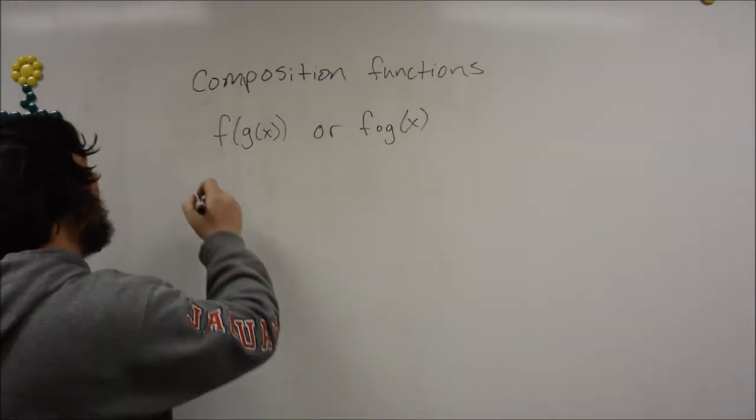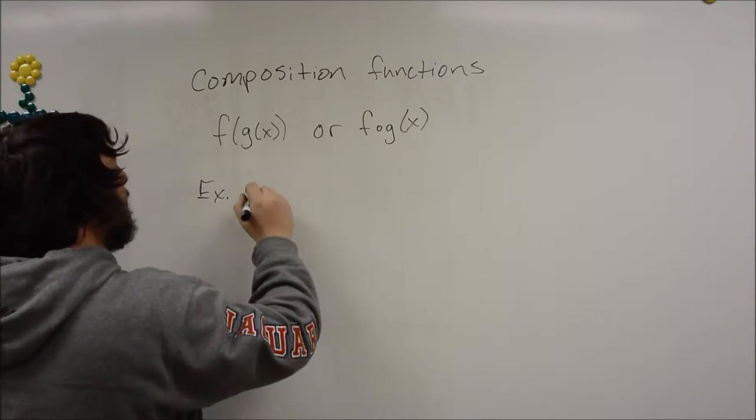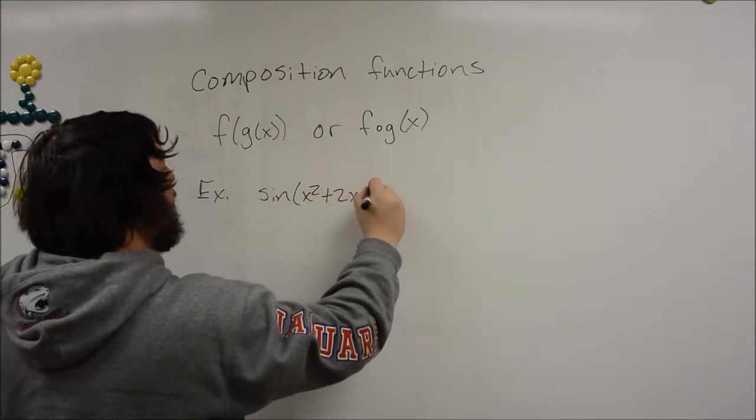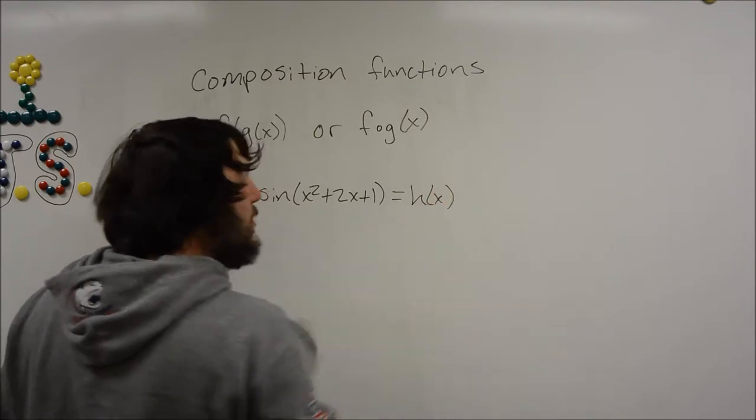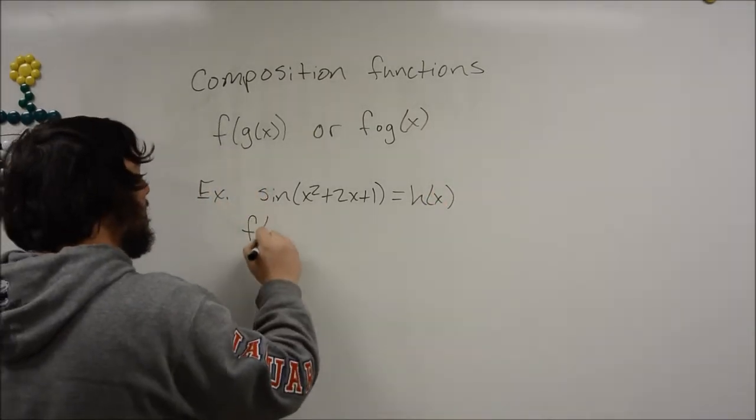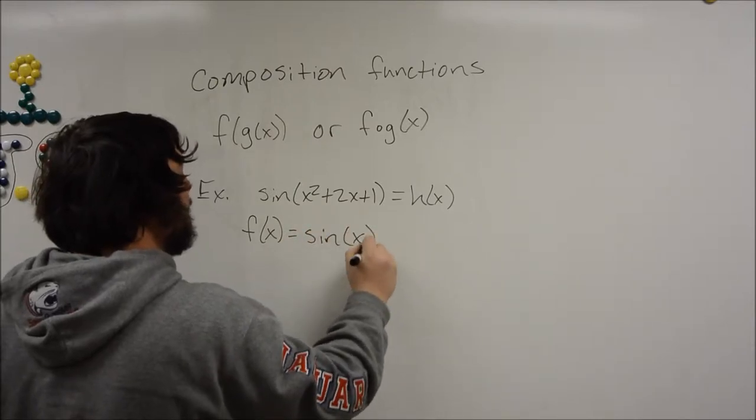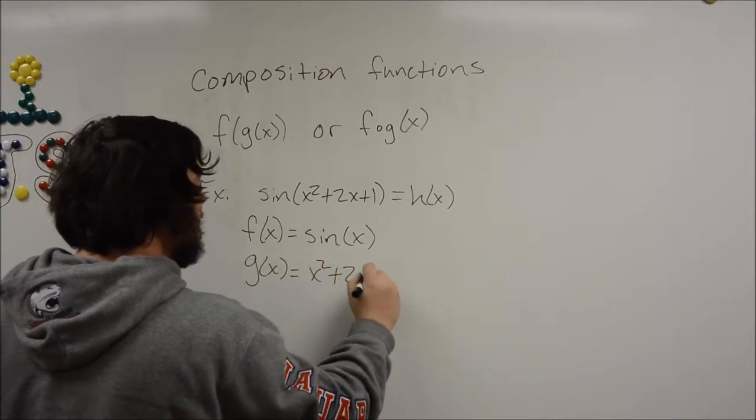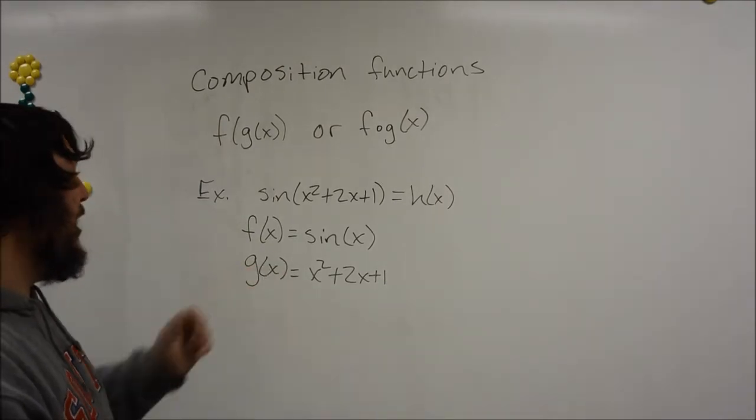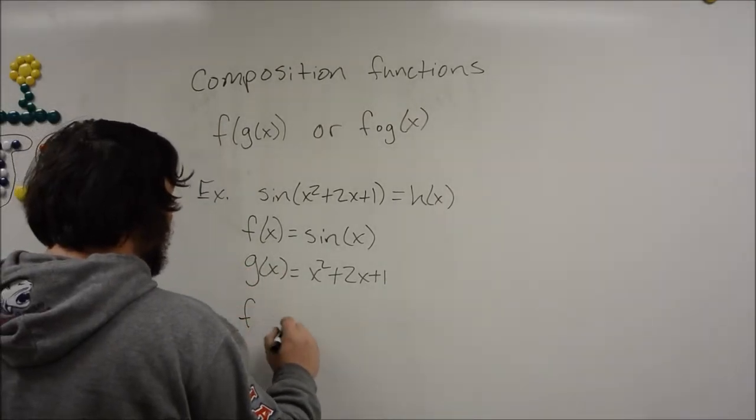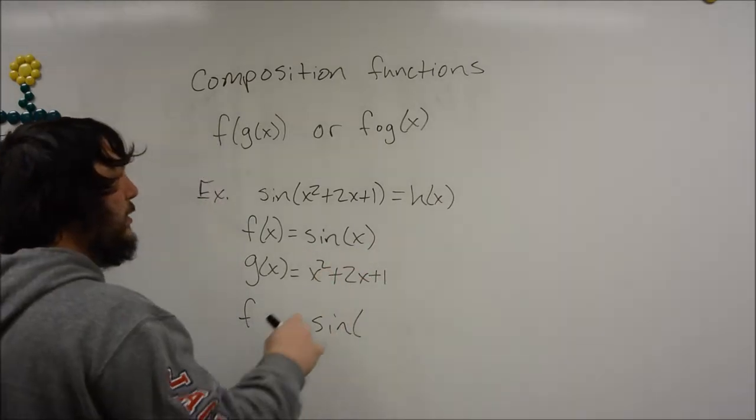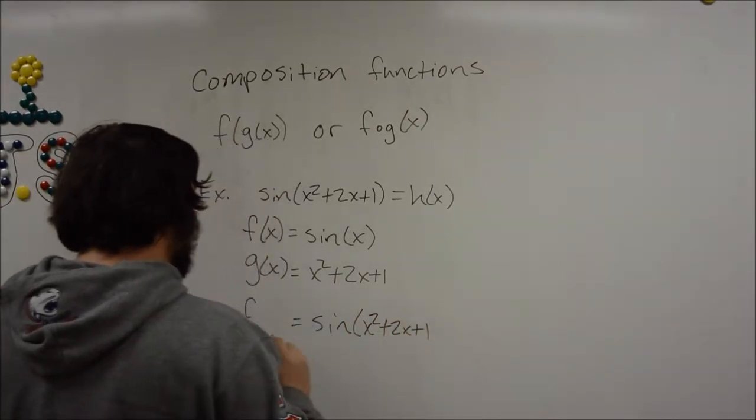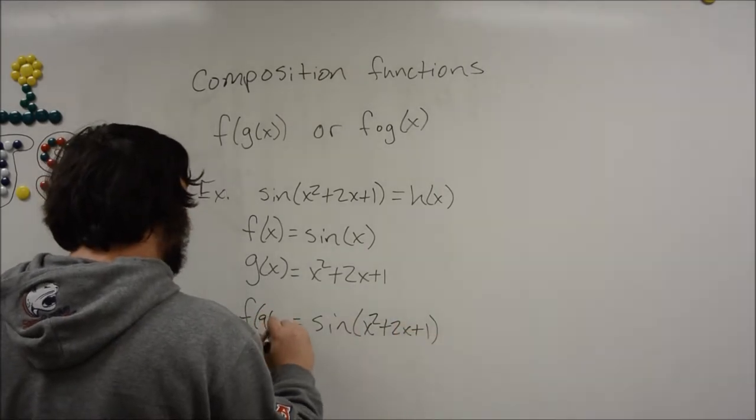So let's take a look at a common example. We've got the sine of x squared plus 2x plus 1. So let's decompose this. We see that f of x equals sine of x, and g of x equals x squared plus 2x plus 1. If we were to compose it back, what we do is we take f of x, and instead of putting x in here, we're just going to put g of x inside. So we have a composition function.